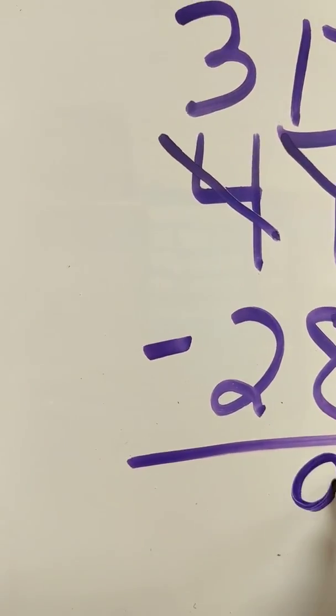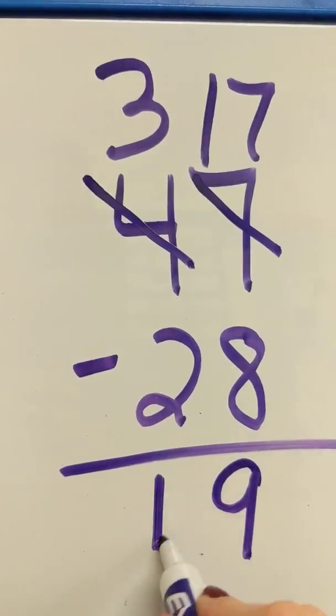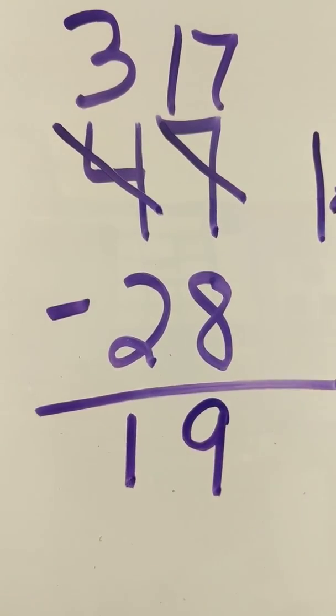17 minus 8 is 9. 3 minus 2 is 1. So I get 19.